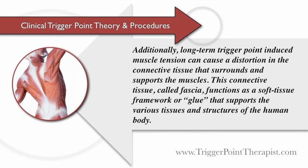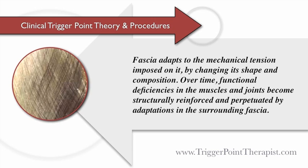Additionally, long-term trigger point induced muscle tension can cause a distortion in the connective tissue that surrounds and supports the muscles. This connective tissue, called fascia, functions as a soft tissue framework or glue that supports the various tissues and structures of the human body. Fascia adapts to the mechanical tension imposed on it by changing its shape and composition. Over time, functional deficiencies in the muscles and joints become structurally reinforced and perpetuated by adaptations in the surrounding fascia.